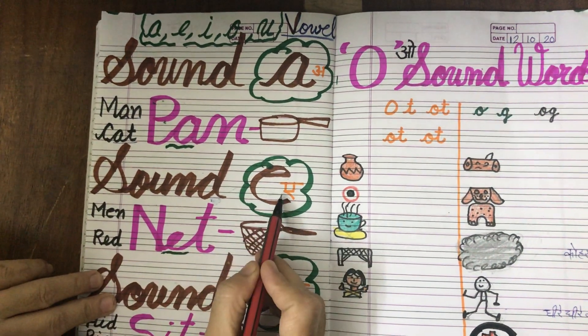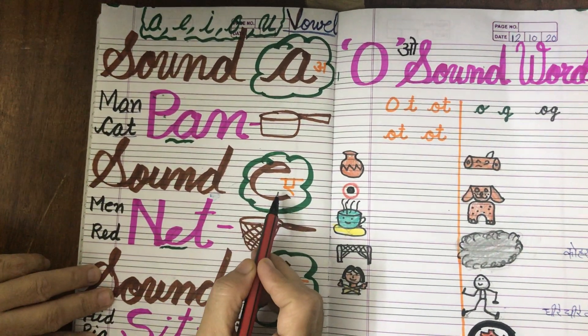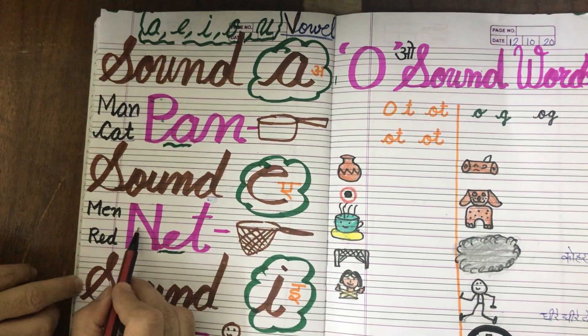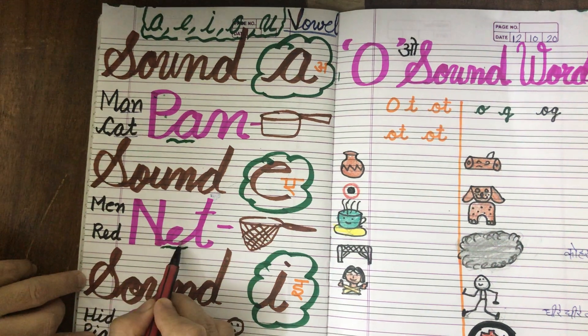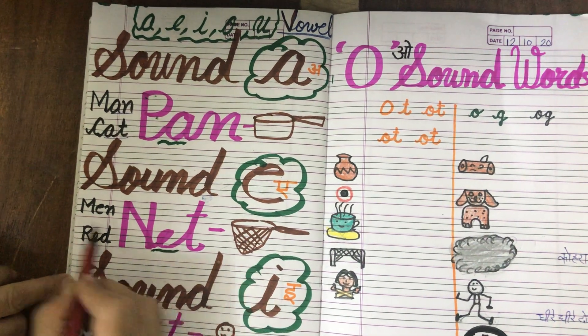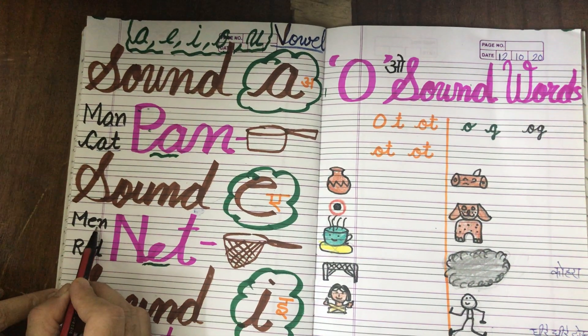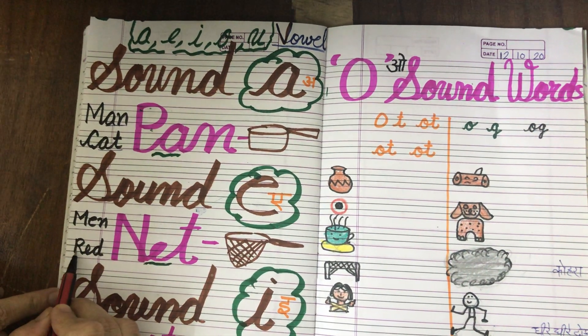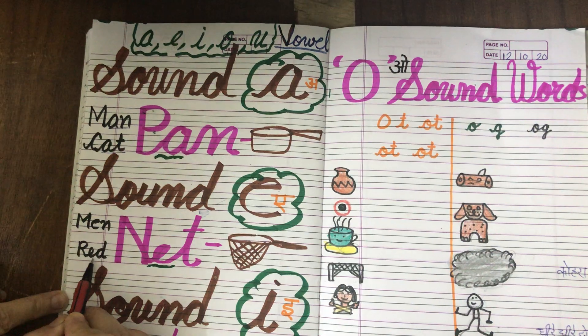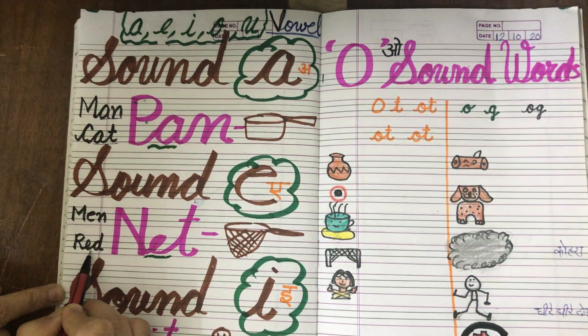Sound of E is A, short. Na, at, net. Ma, N, men. R, at, red.